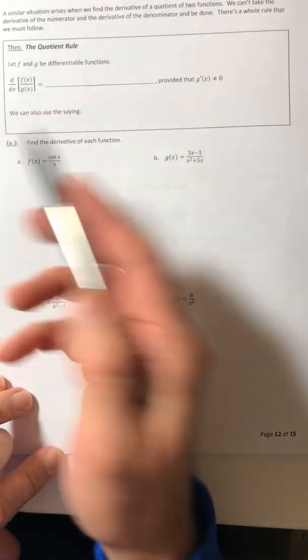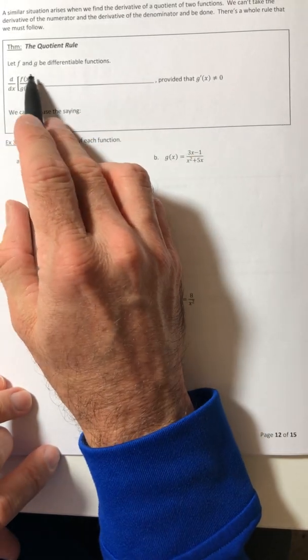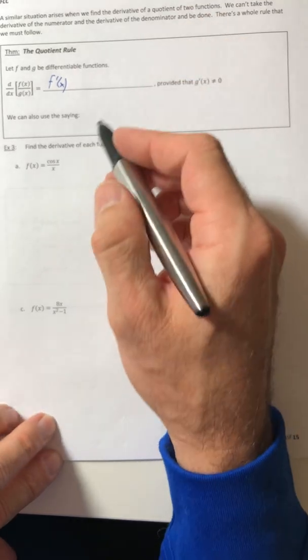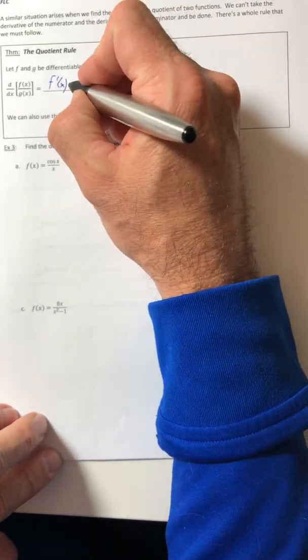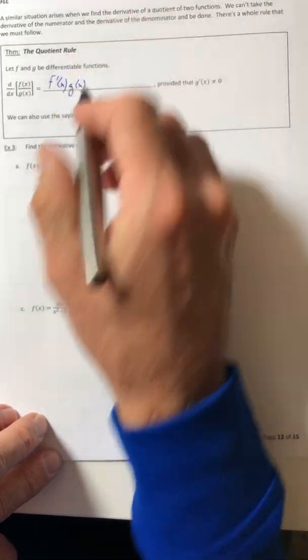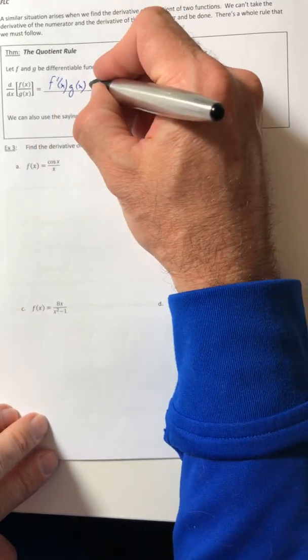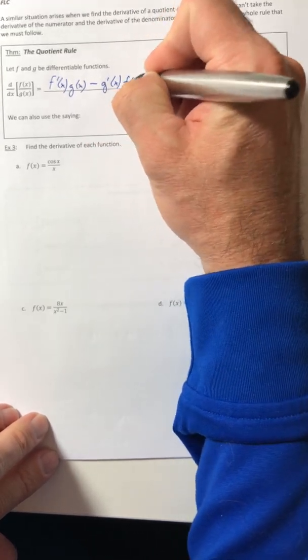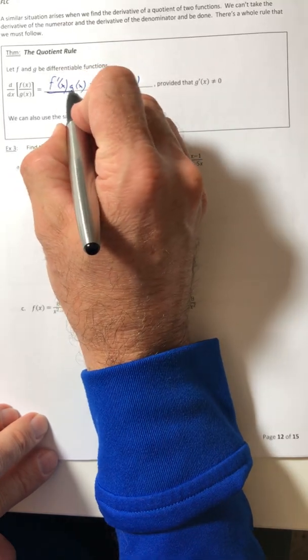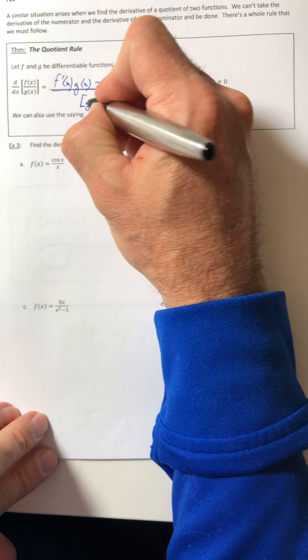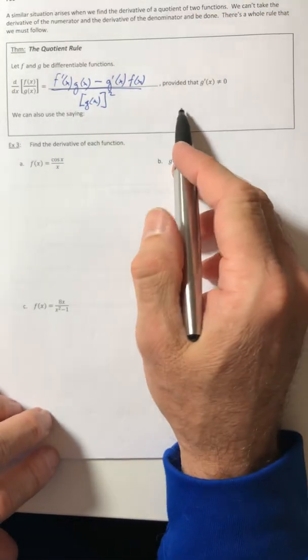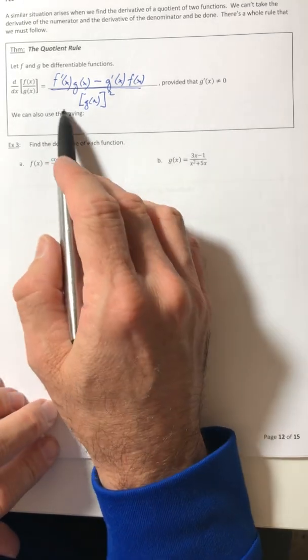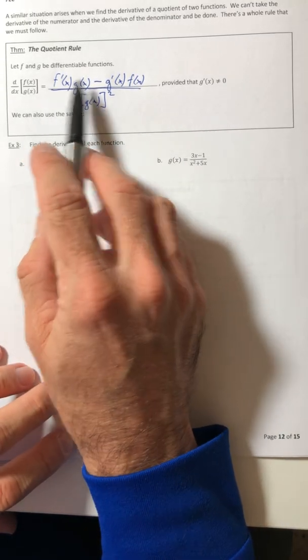So first of all, f and g have to be differentiable functions. So the derivative of f over g is going to equal f prime of x times g. So the derivative of the top times the bottom and then minus, and then it switches. So the derivative of the bottom times the top, and then it's over the original denominator squared. Provided that the derivative of the denominator is not equal to zero.